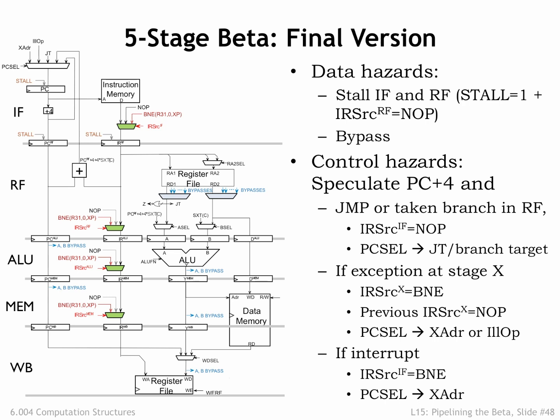To deal with exceptions and interrupts, we added instruction MUXs in all but the final pipeline stage. An instruction that causes an exception is replaced by our magic B&E instruction to capture its PC plus 4 value, and instructions in earlier stages are annulled.